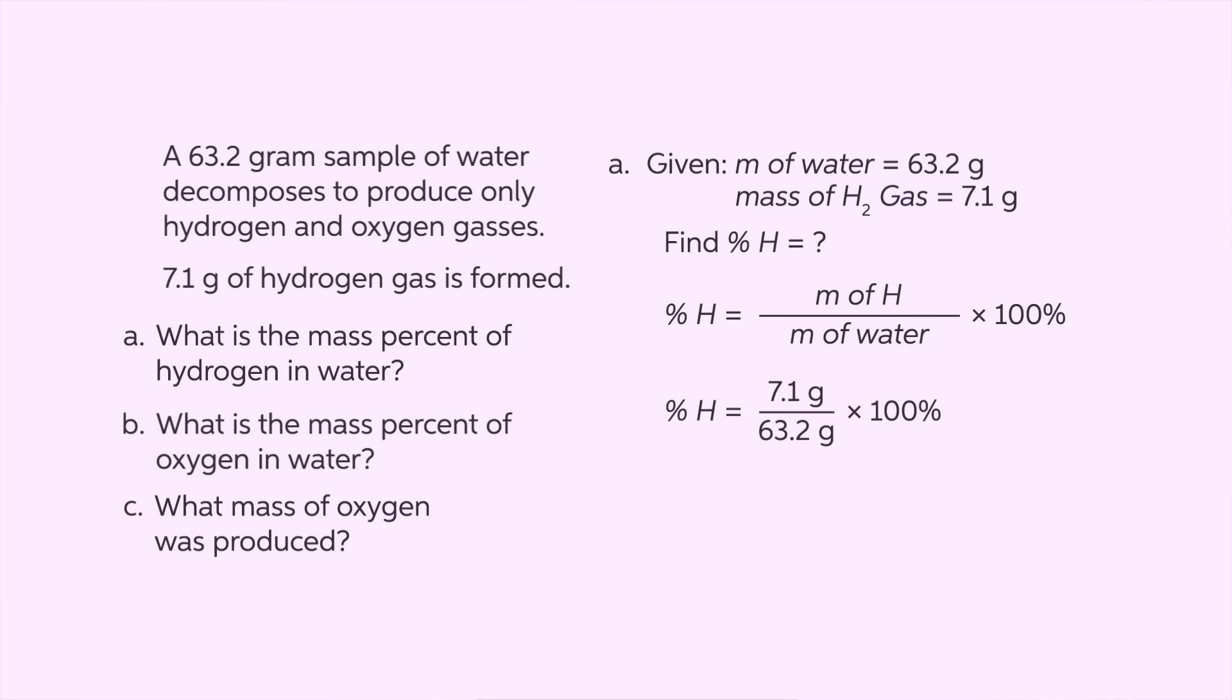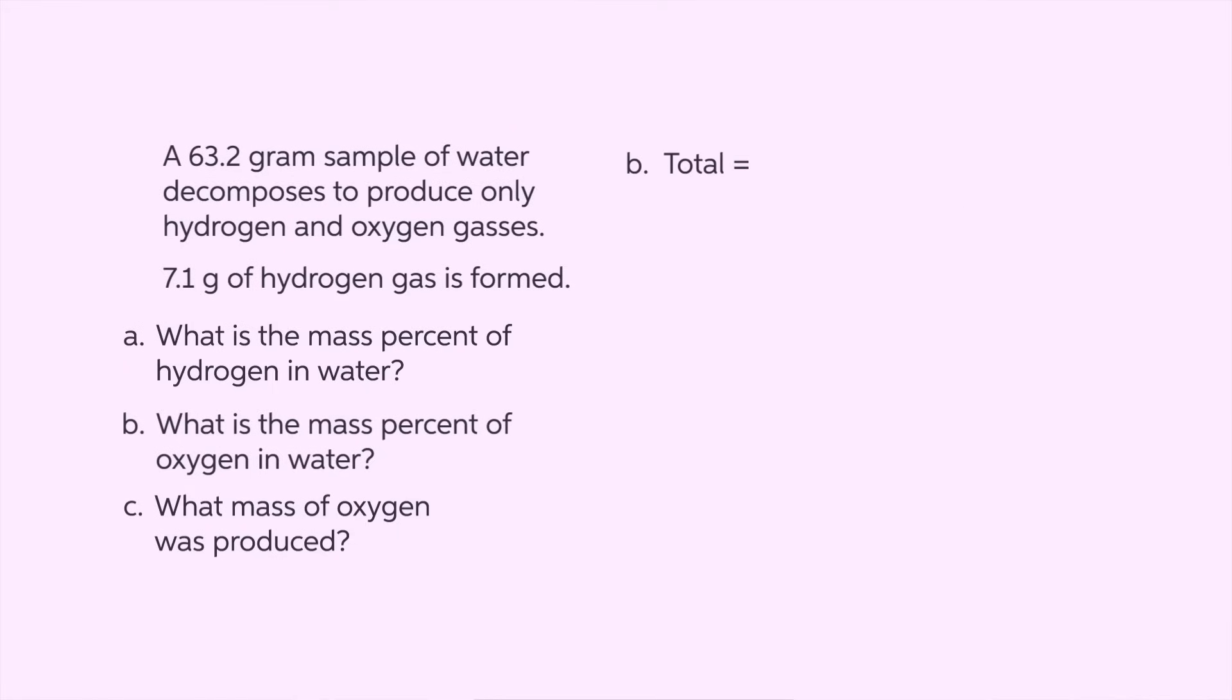After multiplying by 100%, we find 11.2%. For part B, we were not given the mass of oxygen, so it feels as though we don't have enough information. However, we know the process produced only hydrogen and oxygen. Therefore, we know that the percent of hydrogen plus that of oxygen equals 100%. Subtracting, the mass percent of oxygen is 88.8%.